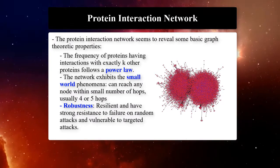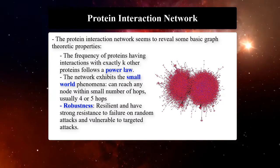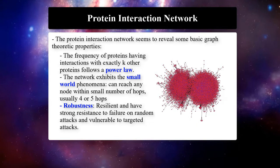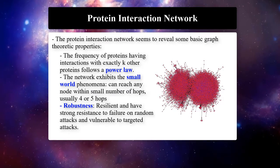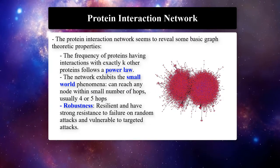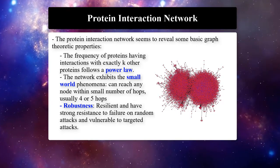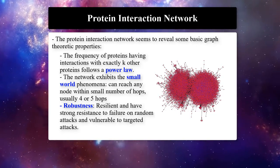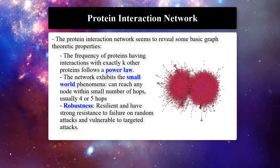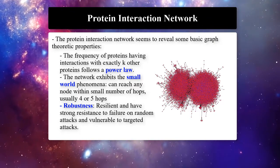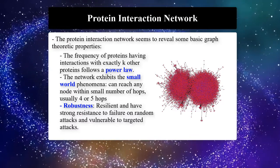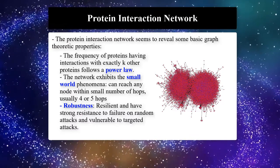The graph shown here is a protein-protein interaction network, or PPI, and has been constructed using three different public databases. This protein-interaction network has more than 1,500 proteins and 337,000 interactions. PPI networks are typically modeled as undirected graphs, in which nodes represent proteins and edges represent interactions.